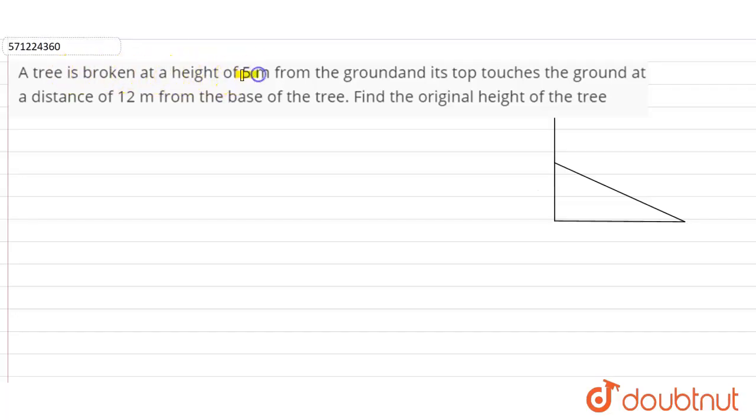A tree is broken at a height of 5 meter from the ground and its top touches the ground at a distance of 12 meter from the base of the tree. Find the original height of the tree.